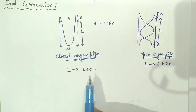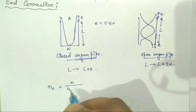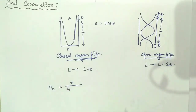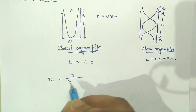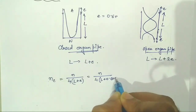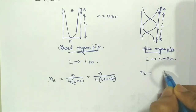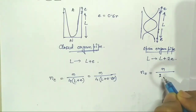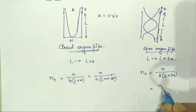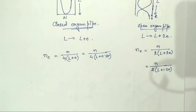Due to the end correction, the fundamental frequency of a closed organ pipe is given by Nc equals N divided by 4 into (L plus E), or N divided by 4 into (L plus 0.6R). The fundamental frequency of an open organ pipe No is given by N divided by 2 into (L plus 1.2R), where R is the radius of the pipe.